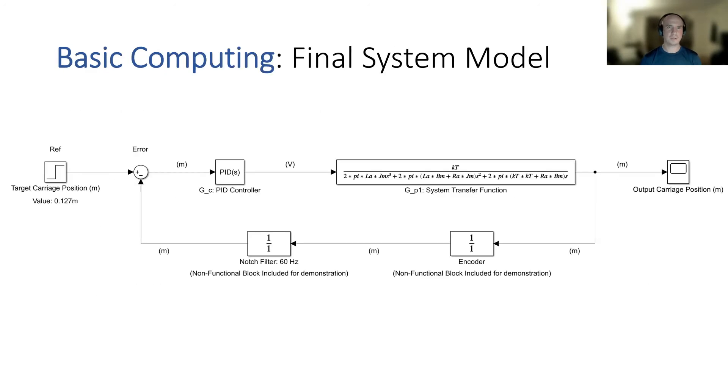So now we're going to look at basic computing, which is pretty much going to be a Simulink model or mock-up of our system. As you can see here, we have our reference position, which I have set to 5 inches or 0.127 meters. That is fed into our PID controller, which is then fed into our system transfer function. From there, we get a feedback signal of the position that is measured by an encoder.